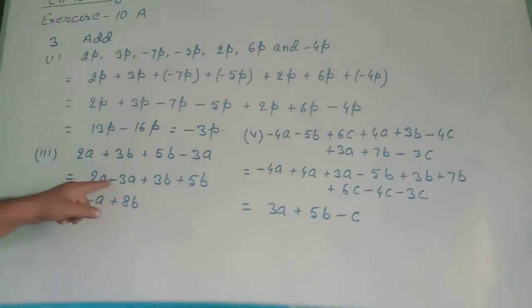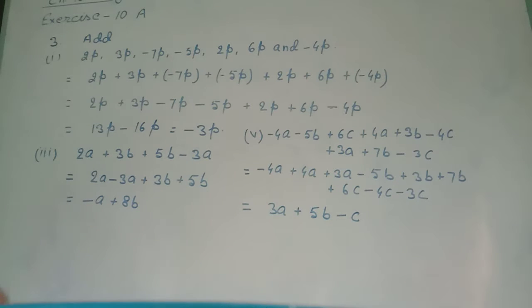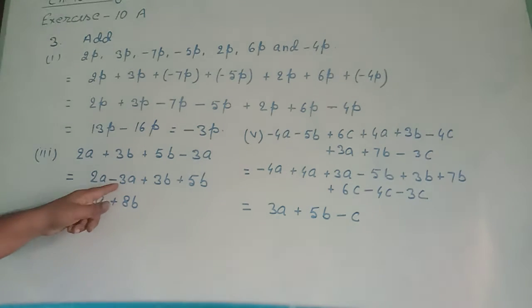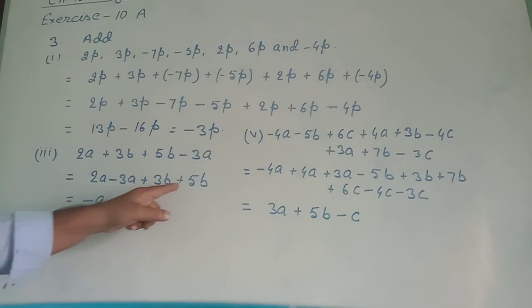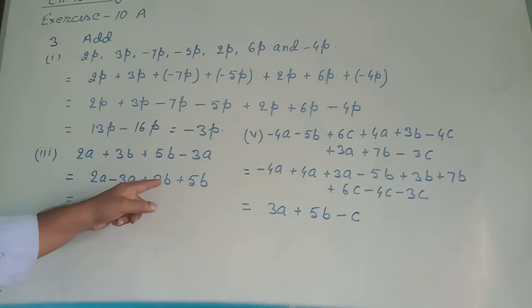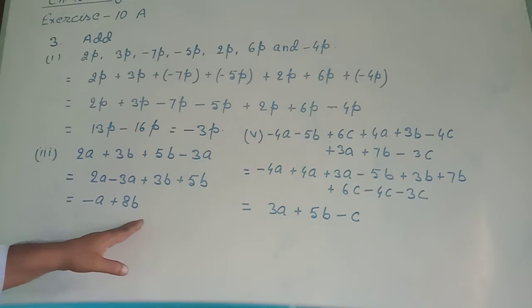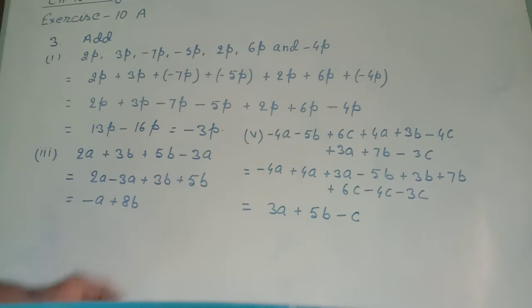And the b terms together: plus 3b plus 5b. We solve these like terms — plus minus means minus, so we subtract smaller from greater: 3a minus 2a equals a, but the sign of the greater number is minus. And 3 plus 5 equals 8b. Answer became minus a plus 8b.